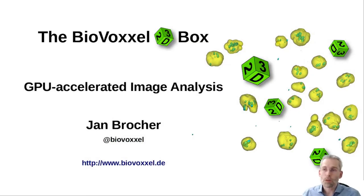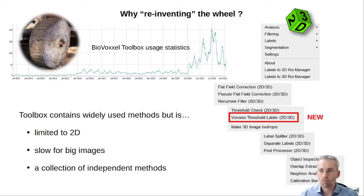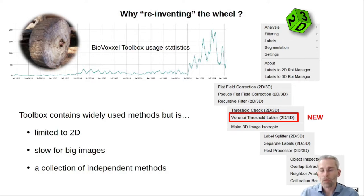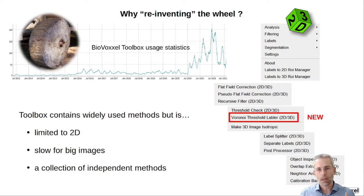Welcome to this short intro and overview of the BioVoxel 3D toolbox, a GPU accelerated image analysis toolbox. Some of you might know the BioVoxel toolbox which has existed since 2013 and usage statistics have shown that quite some people are actively using it. I would say improving the wheel, because the old toolbox has clear limitations: all methods are only applicable to 2D images and in some cases to specific bit depth only. They are very slow for very big images, and it's a collection of very independent and diverse methods. I simply wanted to create something which can be used as a combinable set of tools — and that is where the 3D toolbox comes into the game.